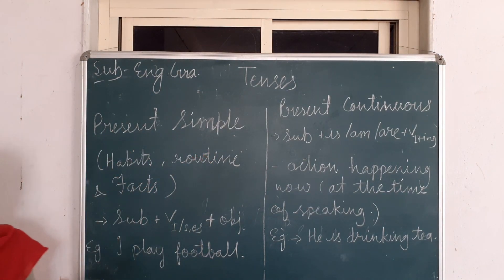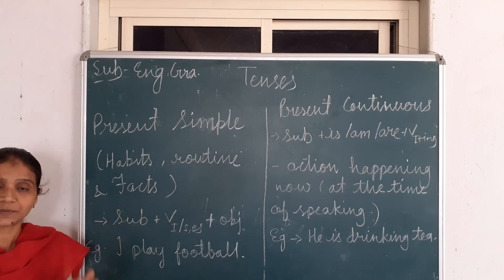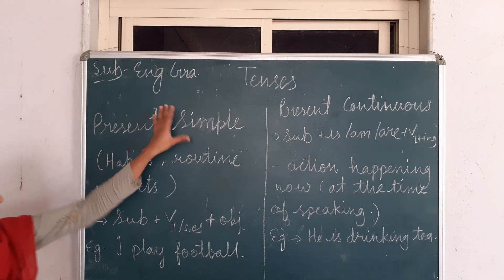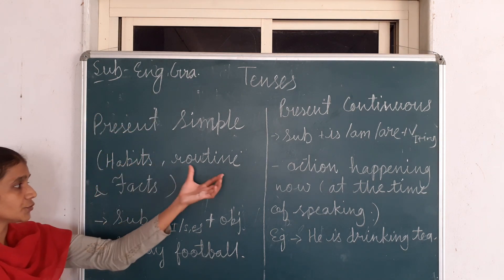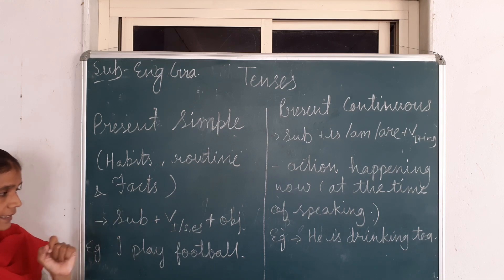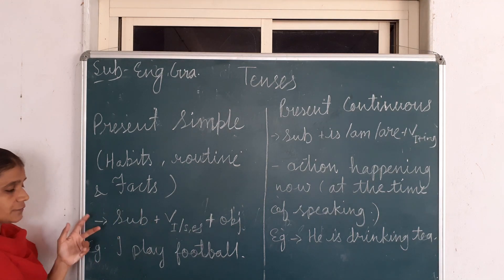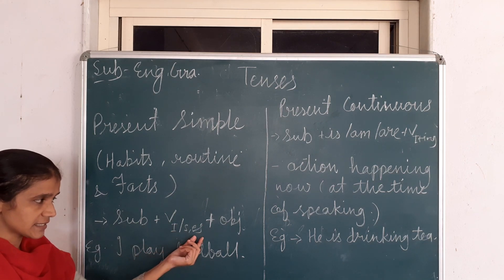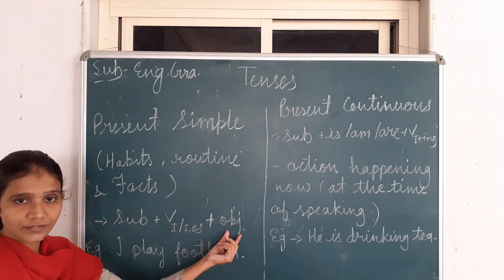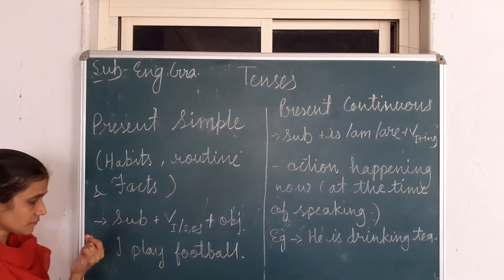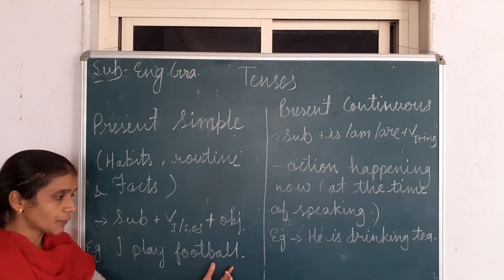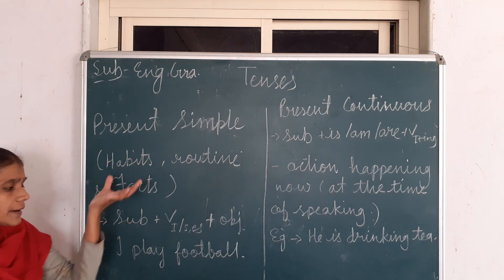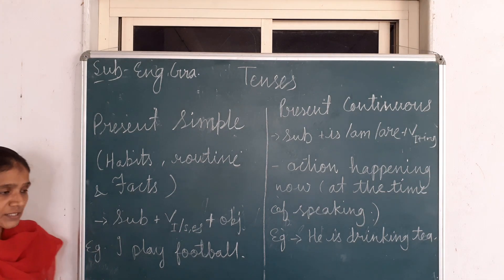Present Tense has four types: Present Simple, Present Continuous, Present Perfect, and Present Perfect Continuous. Present Simple Tense is used when we are talking about habits, routine, and facts. The sentence structure will be: Subject + first form of the verb with S or ES + Object or Complement. Example: 'I play football.' This is our routine or habit — every day I play football.